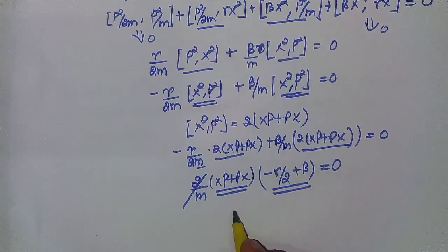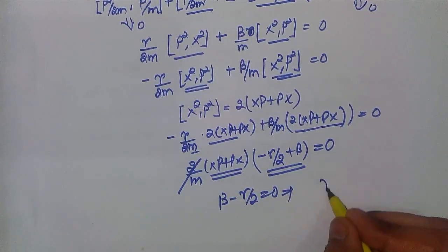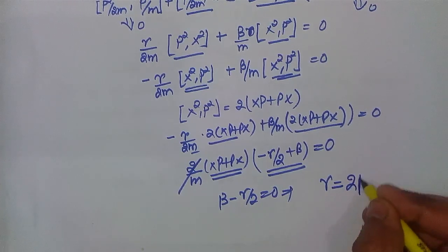If we set this equation equal to zero, we get β - γ/2 = 0, and from here we can get γ = 2β.